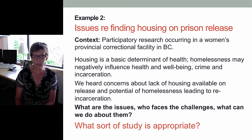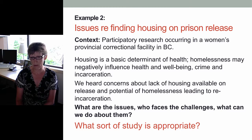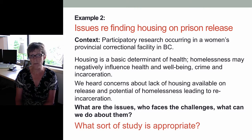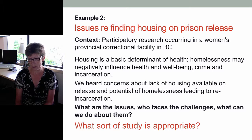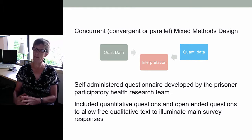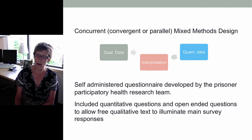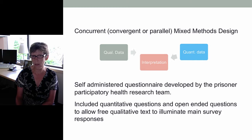The second study is about issues of homelessness and housing on prison release. This was done in the context of participatory research occurring in a women's provincial correctional facility in BC. Housing is a basic determinant of health and homelessness may negatively influence health and wellbeing, crime and incarceration. We had heard concerns about the lack of housing available on release and the potential of homelessness leading to re-incarceration. We wanted to find out what the issues were, who faces the challenges, and what we could do about them. Since many people in provincial corrections are incarcerated for a fairly short time, it seemed more sensible to collect qualitative and quantitative data at the same time.